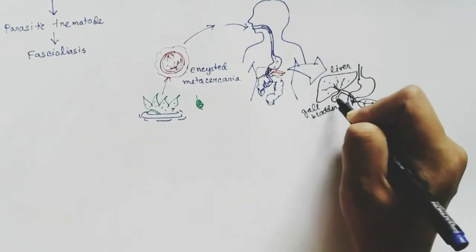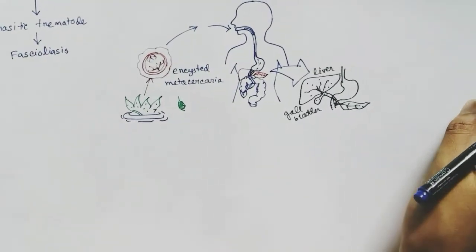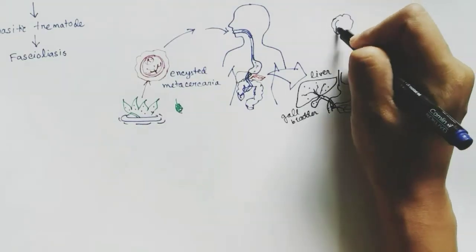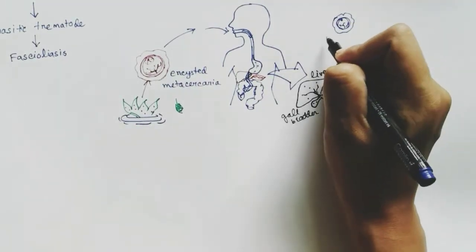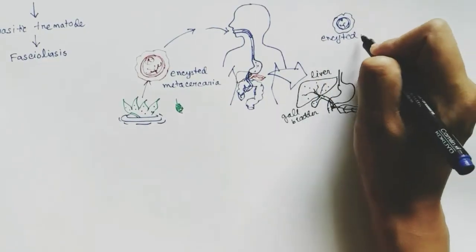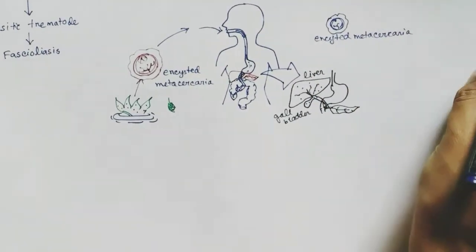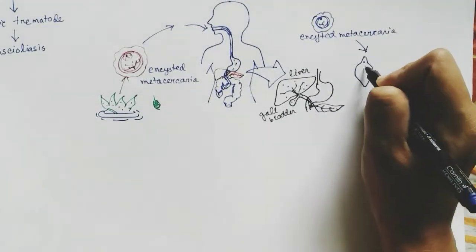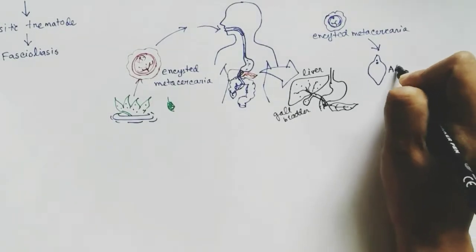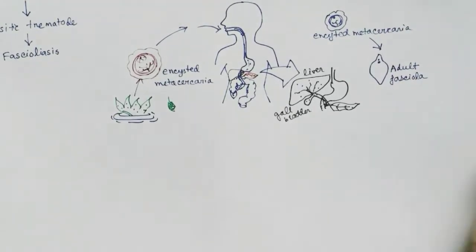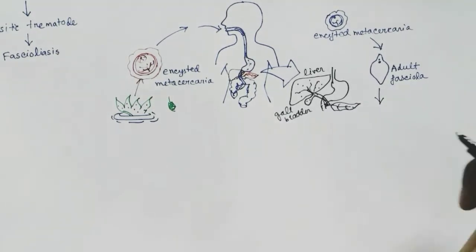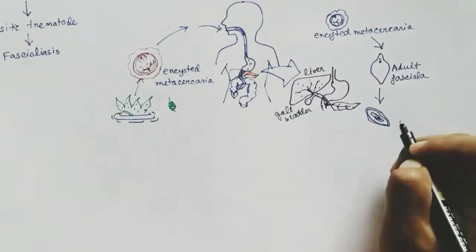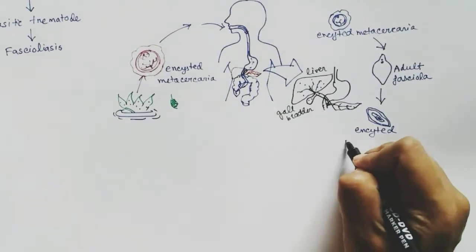When the Fasciola metacercaria reaches the duodenum region it penetrates the wall, reaching the gallbladder and liver, and attacks the hepatic cells. Upon entering the liver, the cyst ruptures and forms the adult Fasciola. The adult Fasciola undergoes its sexual life cycle inside the body of the human or cattle, and forms a new type of cyst — the encysted miracidium stage.